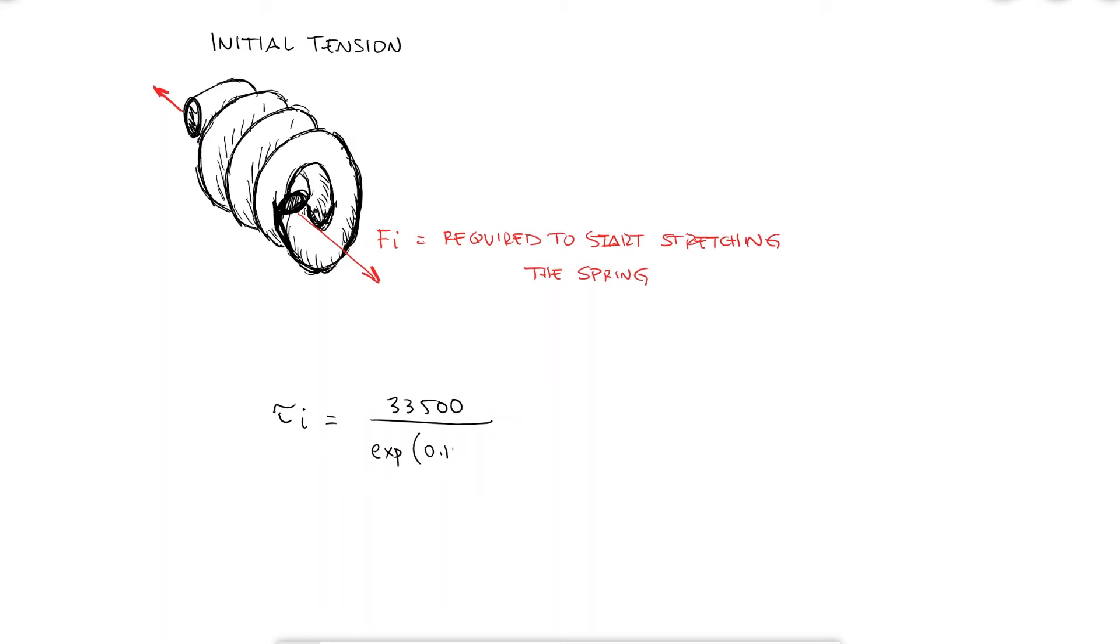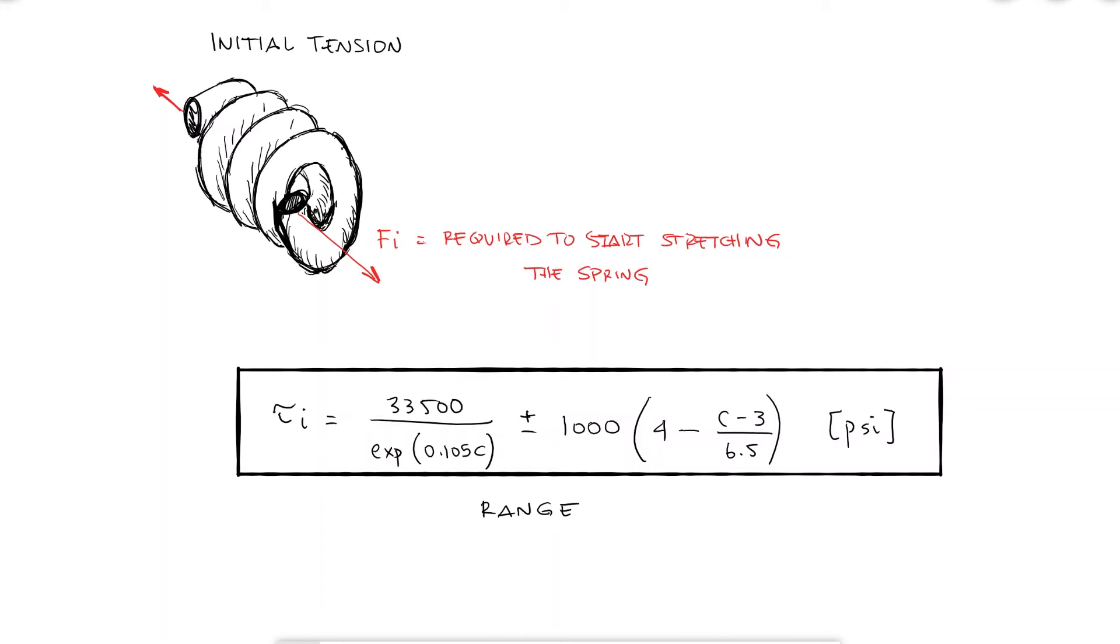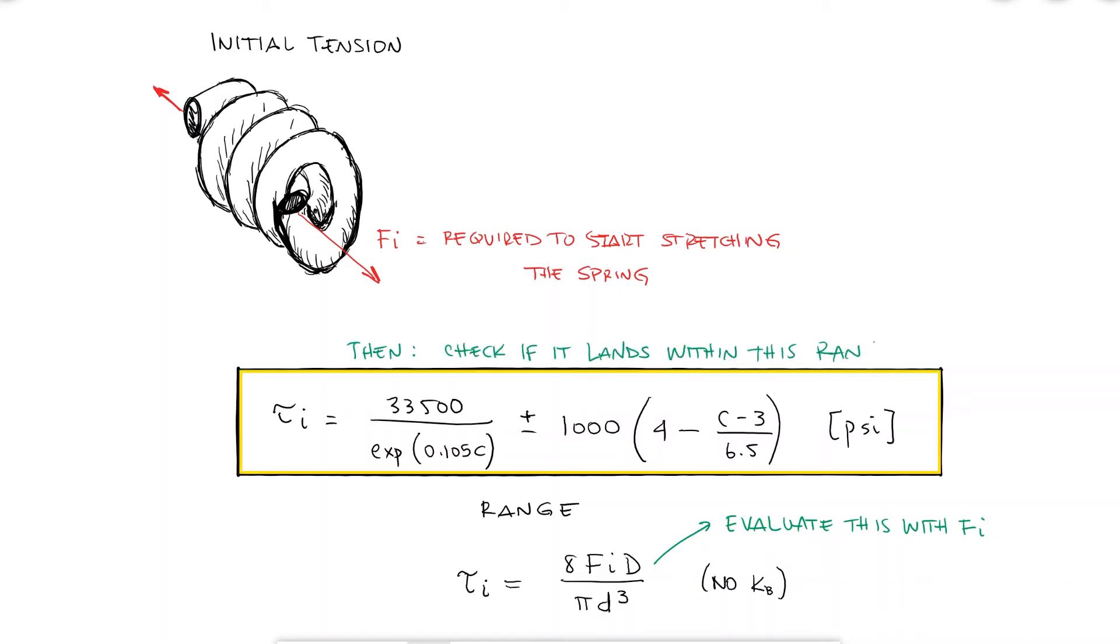The recommended range for the initial torsional stress is given by an expression that depends on the spring index C, and this is the expression you would compare to the uncorrected stress meaning without the curvature correction factor Kb. This expression is used to check if the initial tension force Fi that I'd like my spring to have is creating a shearing stress tau i, again uncorrected, within the range given by the expression.